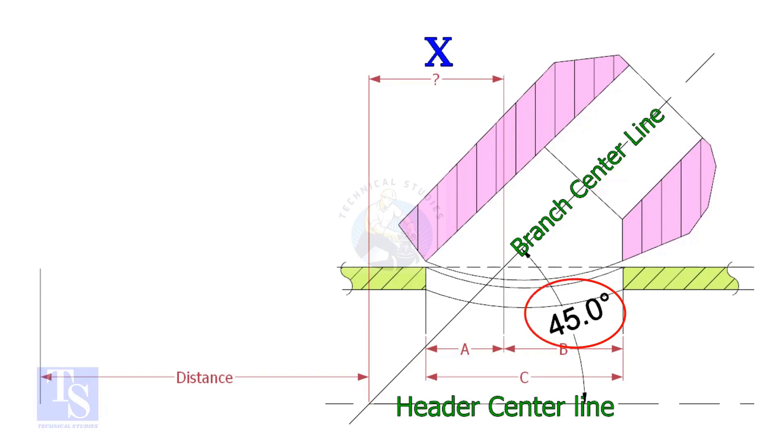If the including angle is 45 degrees, the value of X will always be half OD of the header. Suppose the OD of the header is 400mm, then the value of X will be 200mm.